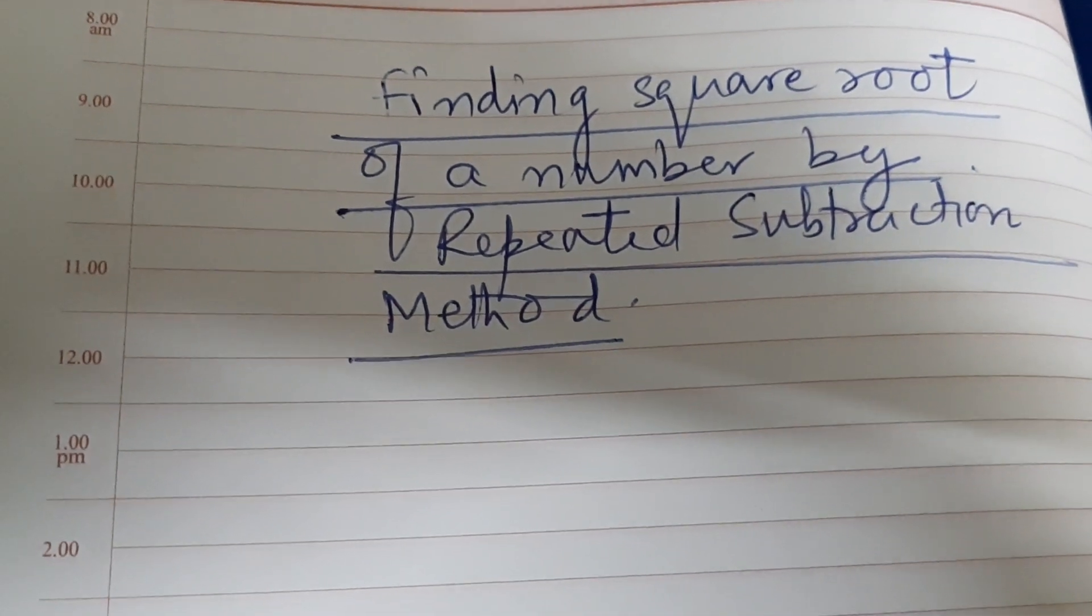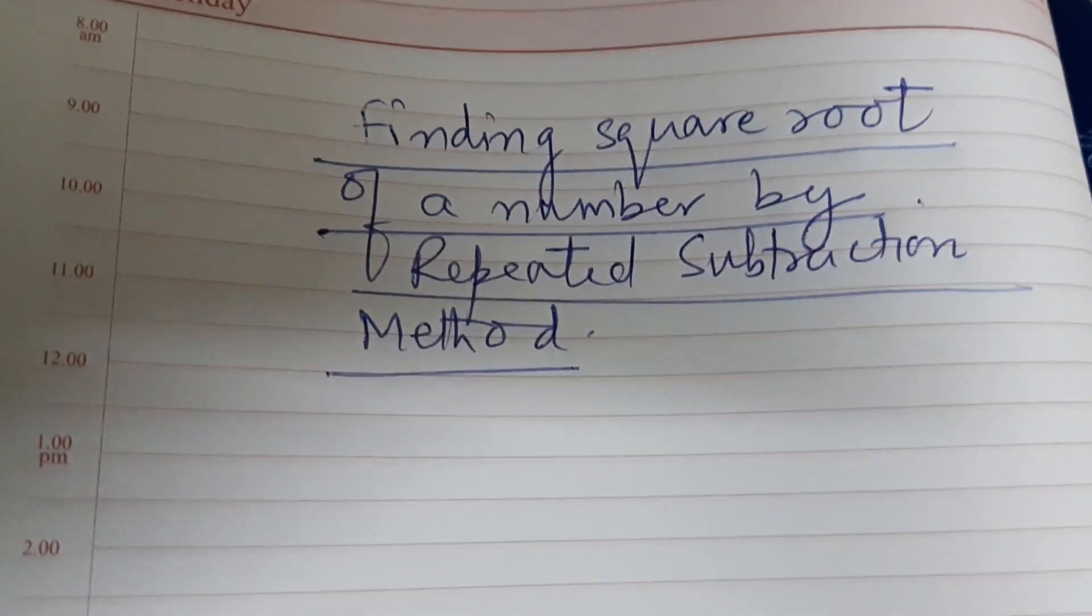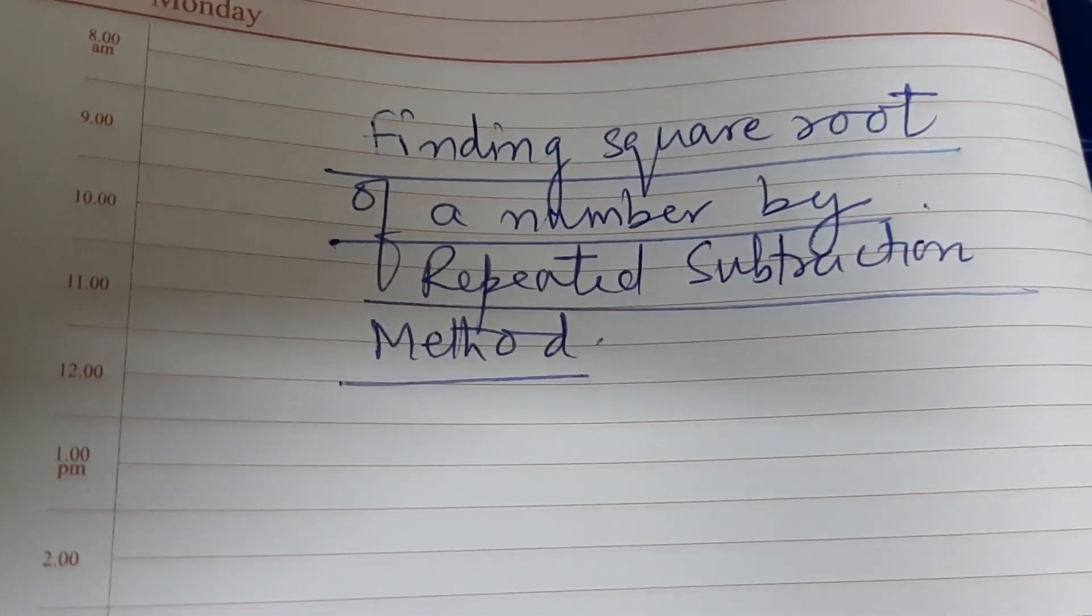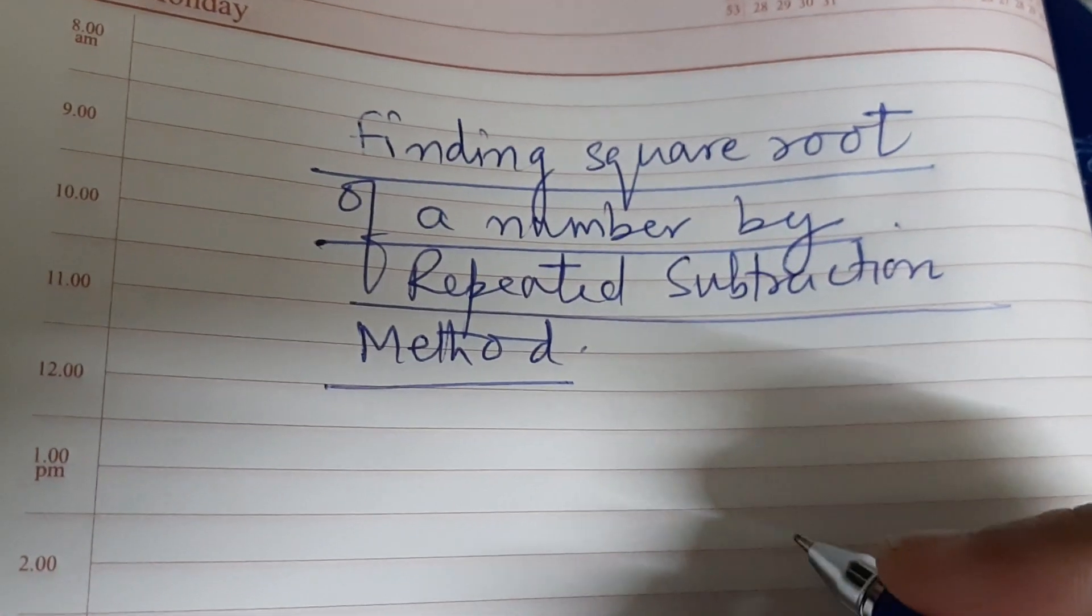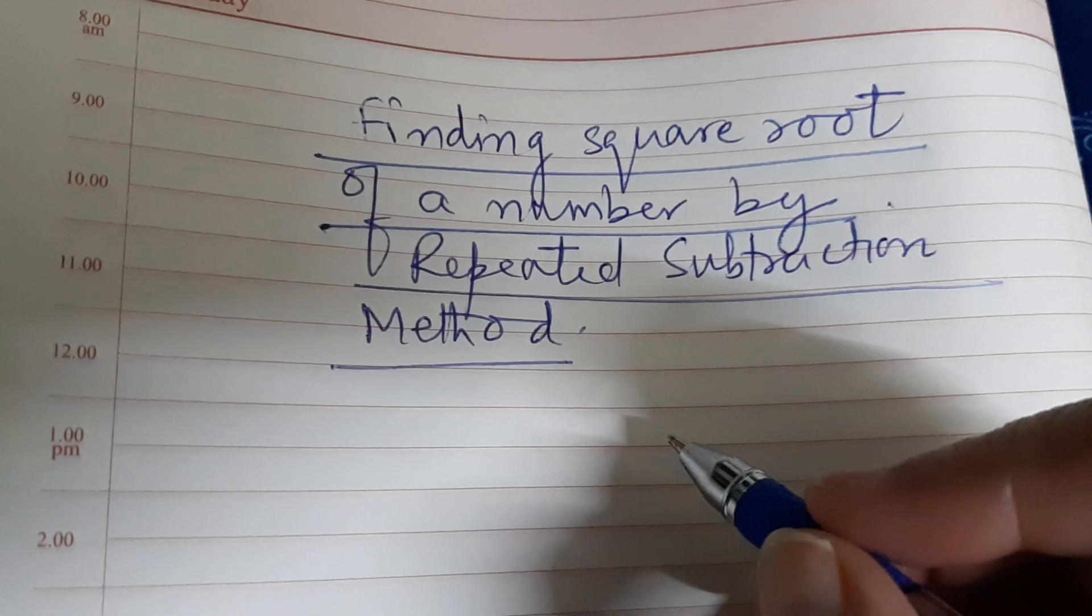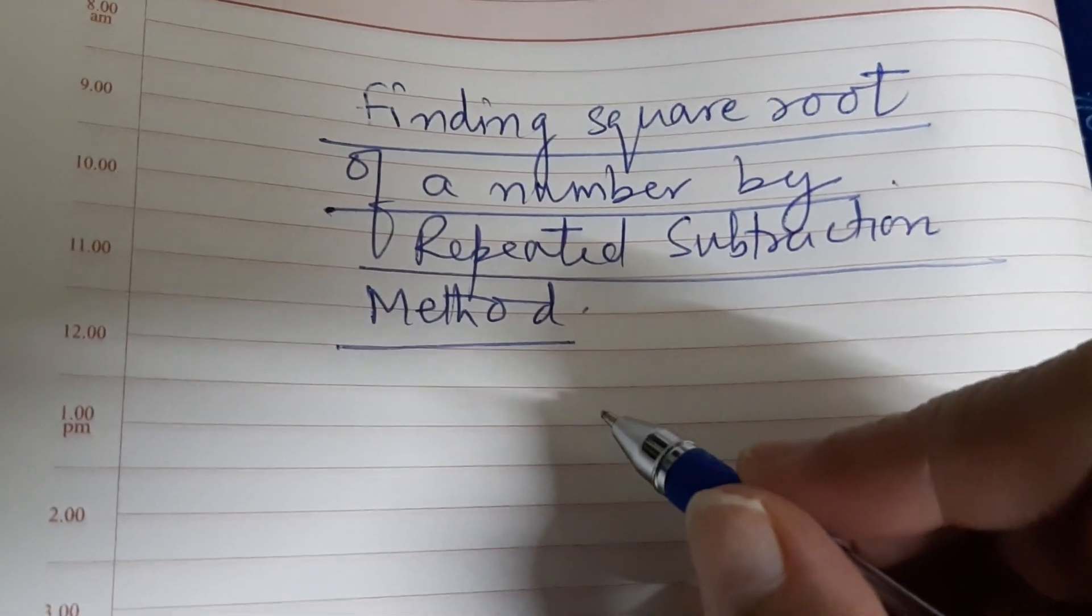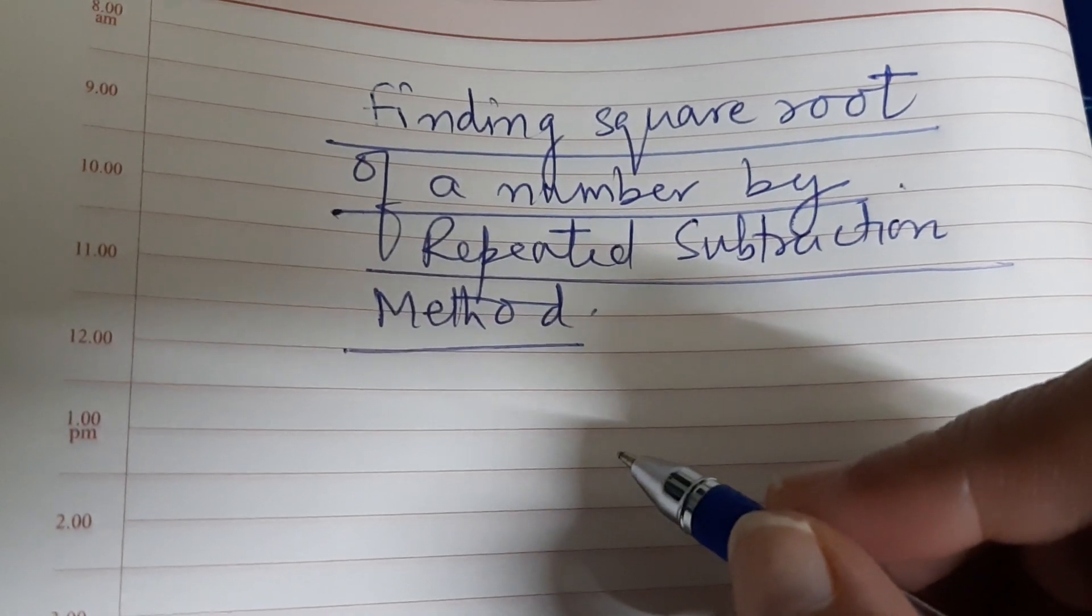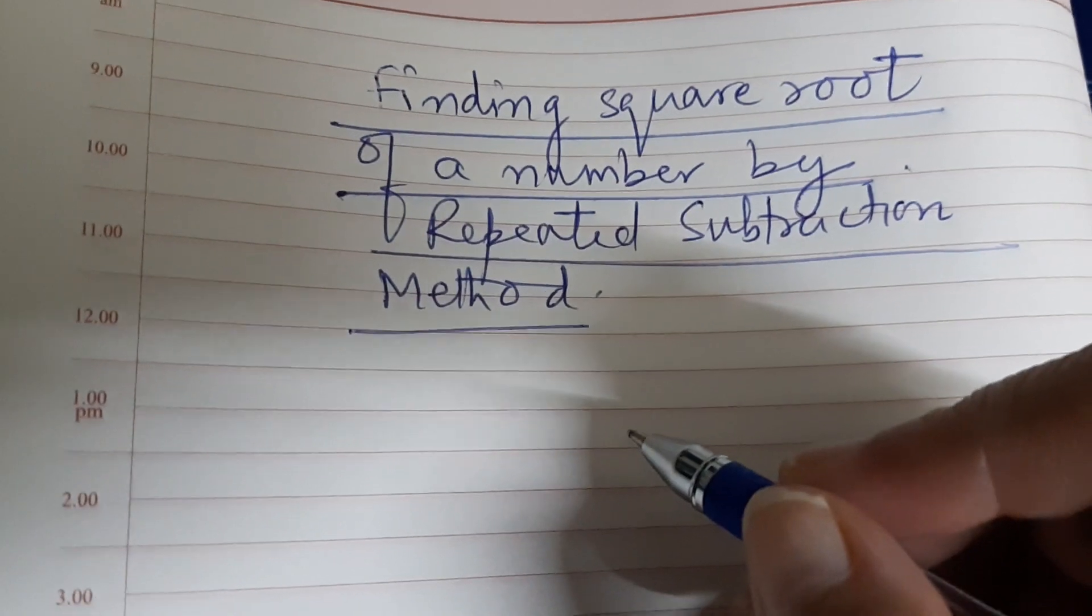Dear students, in this video we are going to learn how to find the square root of a number by repeated subtraction method. I hope you have done the activity on sum of first n odd natural numbers is equal to n squared. What do I mean by this? Let me write it down.